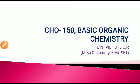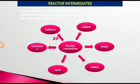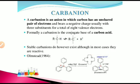Welcome. I am going to teach you the CHO 150 course, basic organic chemistry. Last time we learned about the carbocation, which is a reactive intermediate. Today we are going to learn the second part of reactive intermediates, that is the carbanion. So let's start our topic with the carbanion.